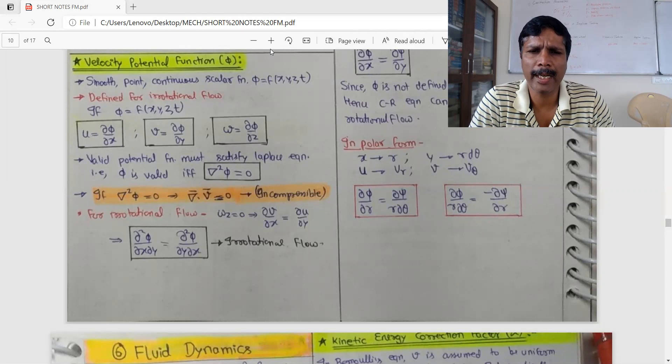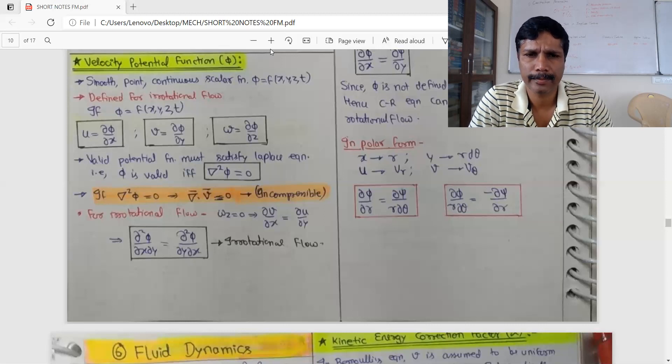For irrotational flow, omega is equal to 0. dv/dx equal to du/dy. We substitute for that: d²phi/dxdy equal to d²phi/dydx. Irrotational flow system will be used to change the velocity potential function.